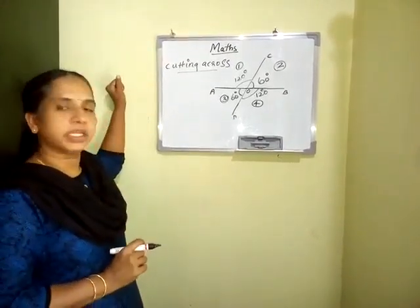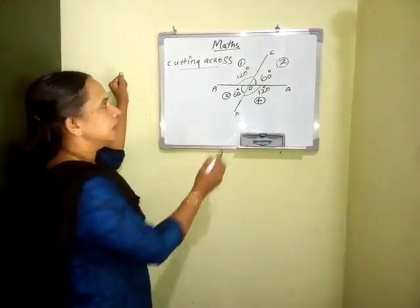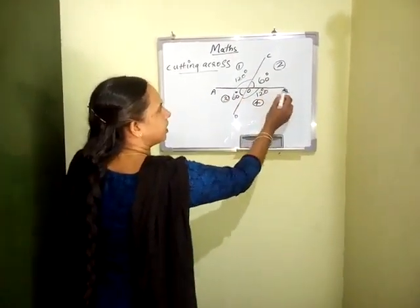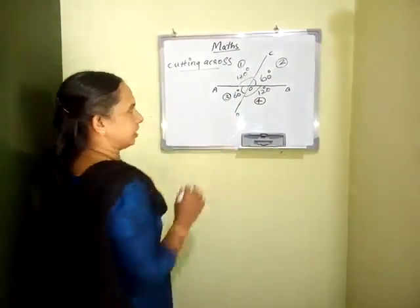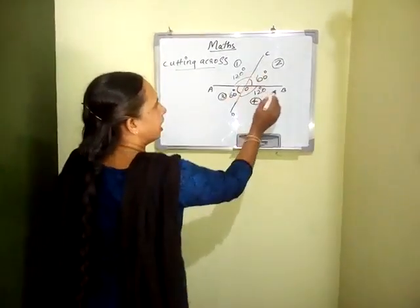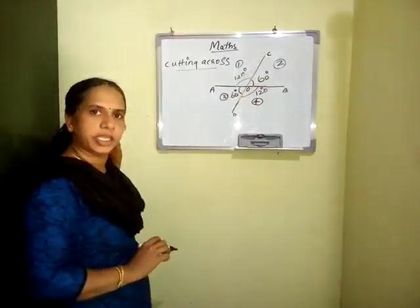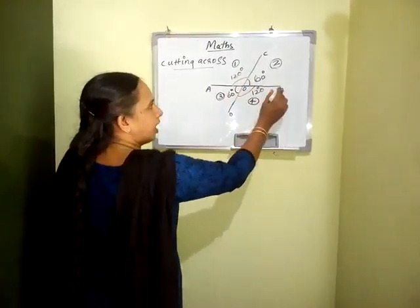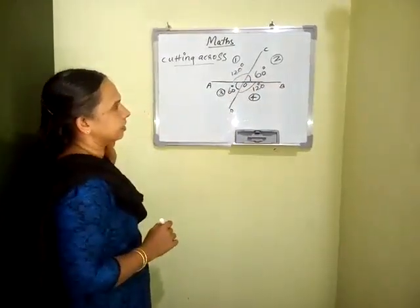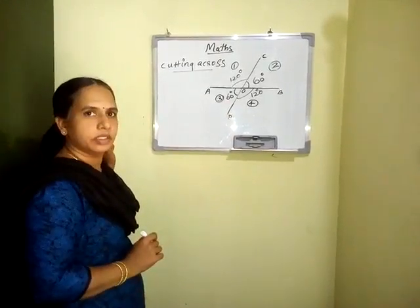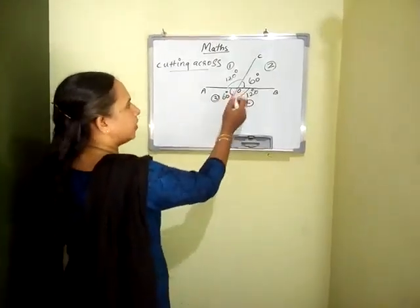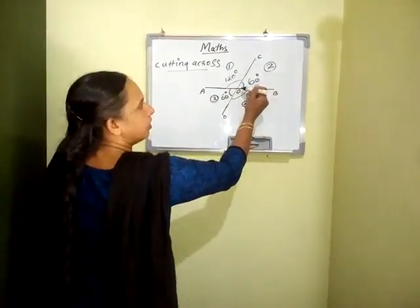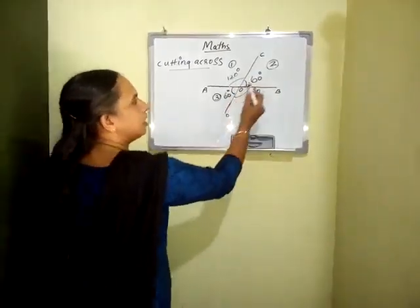From this figure, we can see that angle AOC and angle BOD are both equal to 120 degrees — they are equal angles. Angle AOC is the opposite of angle BOD; they are equal. Considering angle AOD, its opposite is angle BOC, and they are also equal.